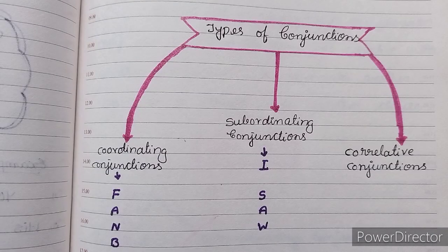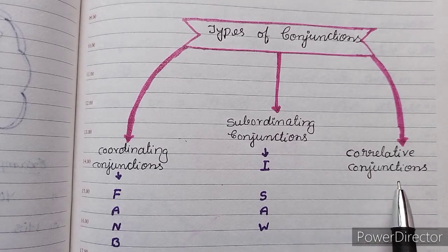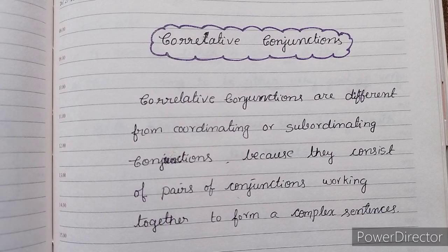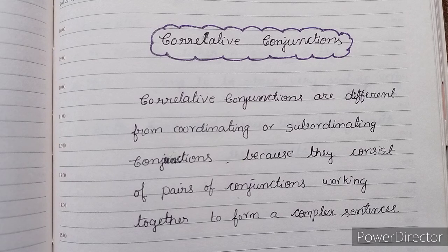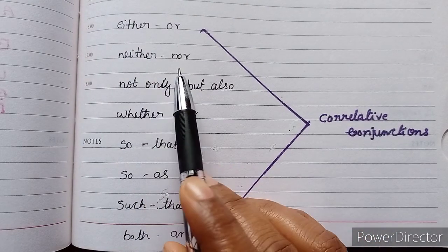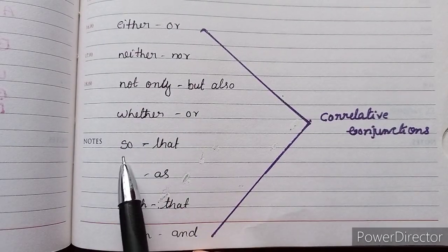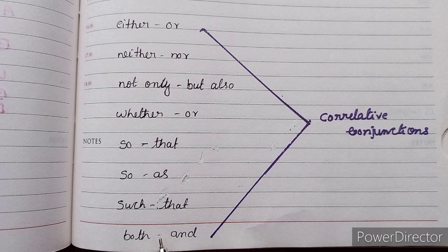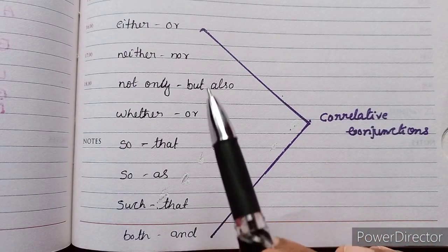The third type is correlative conjunctions. Correlative conjunctions are different from coordinating and subordinating conjunctions because they consist of pairs of conjunctions working together to form complex sentences. Some commonly used correlative conjunctions are: either/or, neither/nor, not only/but also, whether/or, so that, so/as, such that, and both/and.